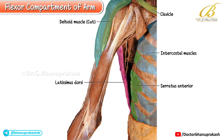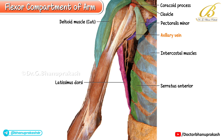The clavicle is visible at the top, and just below its lateral end, the cut portion of the pectoralis minor can be seen attached to the coracoid process. Deep to this region lies the axillary vein, coursing beneath the cut edge of pectoralis minor toward the clavicle. Accompanying it is a portion of the brachial plexus.